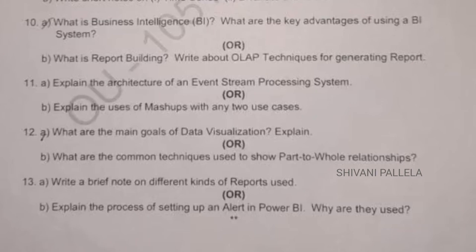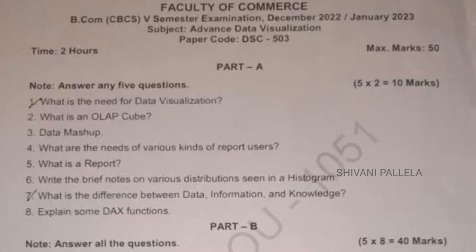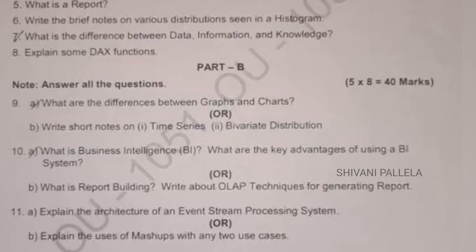The main important question is: what are the goals of data visualization? This is an important question from unit four. For short answers, topics like data mashup, the need for data visualization, and what is meant by data visualization are important. For short questions, five to six sentences is enough for two marks. For long questions of eight marks, a minimum of two sides of a page is required.